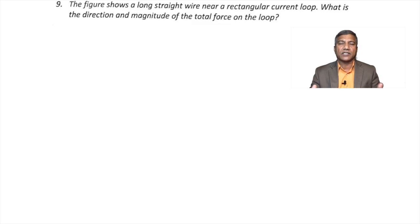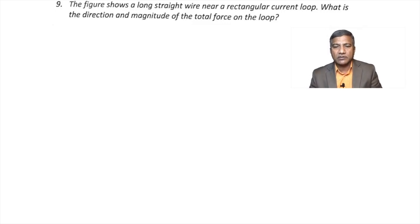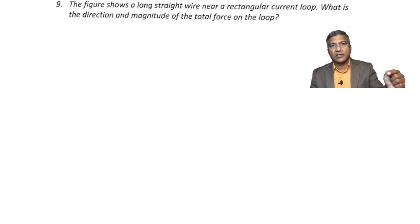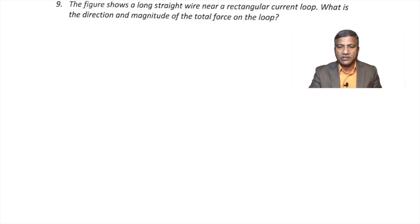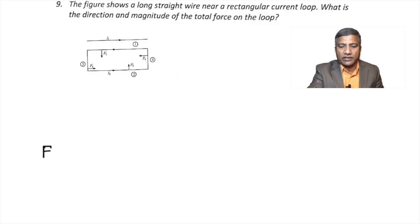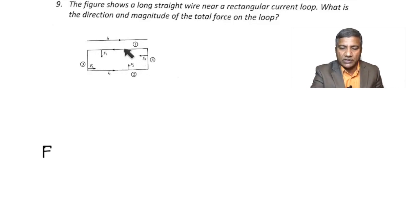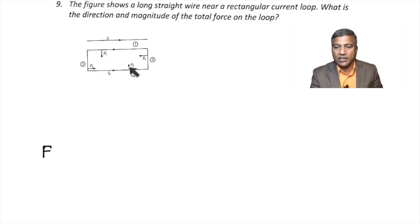Question 9: A long straight wire near a rectangular current loop. What is the direction and magnitude of the total force on the loop? The loop is situated in the magnetic field produced by the current in the straight conductor. Using the right-hand rule, the forces on each side are: down on one long side, up on the other, and to the right and left on the short sides.